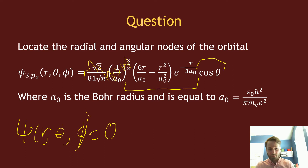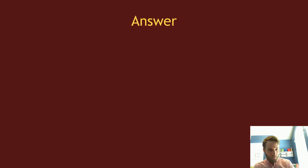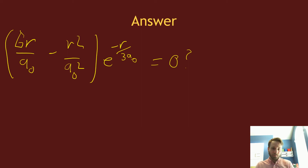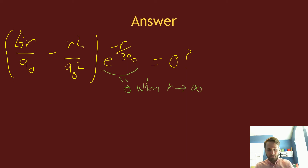Let's focus on the radial part first. The radial part of the wave function is (6r/a₀ − r²/a₀²) multiplied by e^(−r/3a₀). We want to know when that equals zero. The exponential term equals zero only when r goes to infinity, which is not really where a node is located, so we can essentially divide that term out and ignore it.